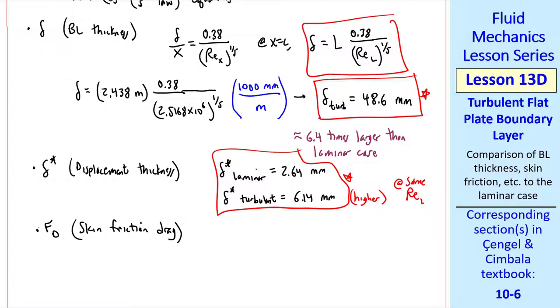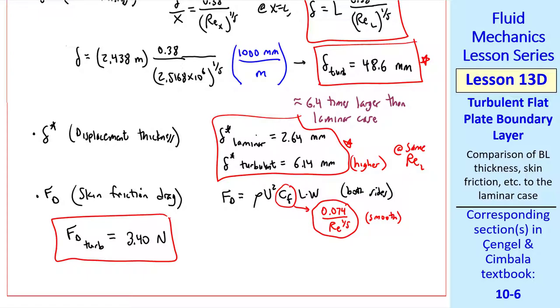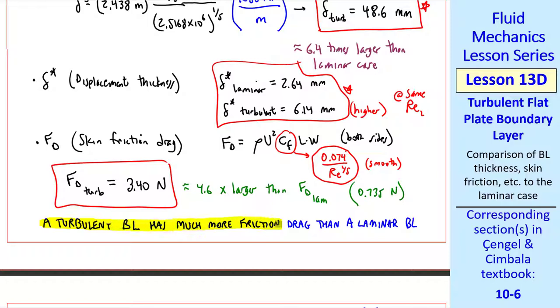Next, we'll calculate FD, the skin friction drag. This was our expression for FD for the previous lesson. That same equation holds now, except we use a different CF. Namely, the equation for the one-fifth law and a smooth plate. We note that this is the drag on both sides of the plate, top and bottom. When we plug in the numbers, we get 3.4 newtons for the turbulent case, which is about 4.6 times larger than FD laminar, which was 0.735 newtons.